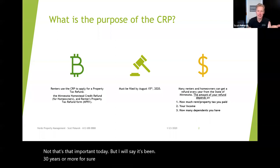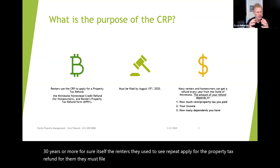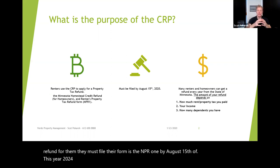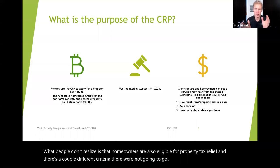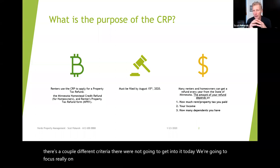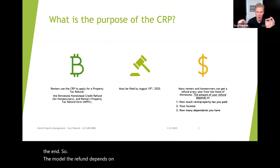The renters use the CRP to apply for the property tax refund. They must file their form — it's the NPR-1 — by August 15th of this year, 2020, for tax year 2019. What people don't realize is that homeowners are also eligible for property tax relief, but we're going to focus really on the renter piece today. The amount of the refund depends on how much property tax was paid, the income, and then how many dependents.